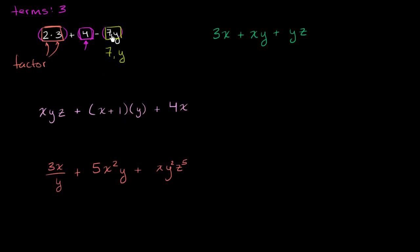This constant factor here — this number seven that is multiplying the variable — also has a special name: it is called the coefficient of this term. The coefficient is the non-variable that multiplies the rest of the term. So here with 7y, even if it was 7xy, or 7xyz, or 7xyz squared, that non-variable multiplying everything else is considered to be the coefficient.